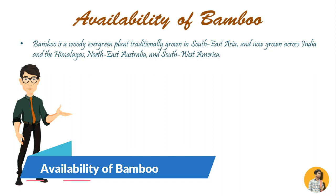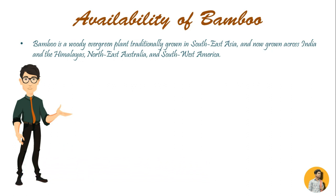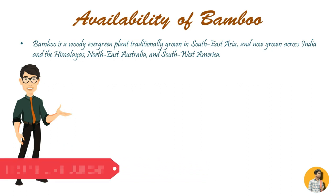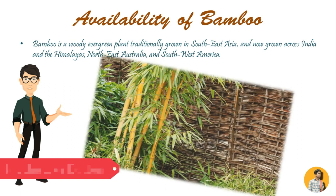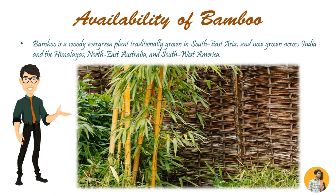Availability of Bamboo: Bamboo is a woody evergreen plant traditionally grown in South-East Asia and now grown across India, the Himalayas, North-East Australia and South-West America. It grows in diverse climate zones and can spread rapidly. Bamboo can withstand heat and humid climates.